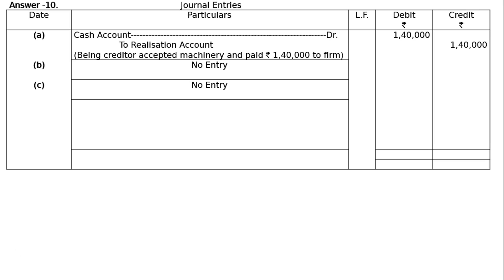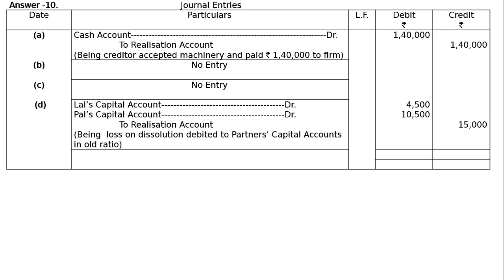Part D: Loss on realisation was Rs.15,000. Loss on realisation means partners' capital accounts are debited and realisation account is credited. Lal's capital account is debited Rs.4,500 and Pal's capital account is debited Rs.10,500 — in the 3:7 ratio — to realisation account Rs.15,000, being loss on realisation debited to partners' capital accounts in the old ratio.